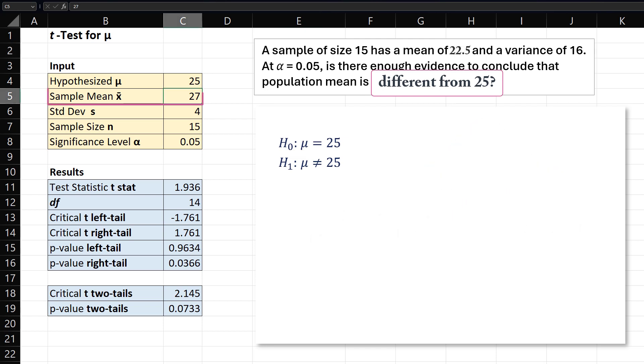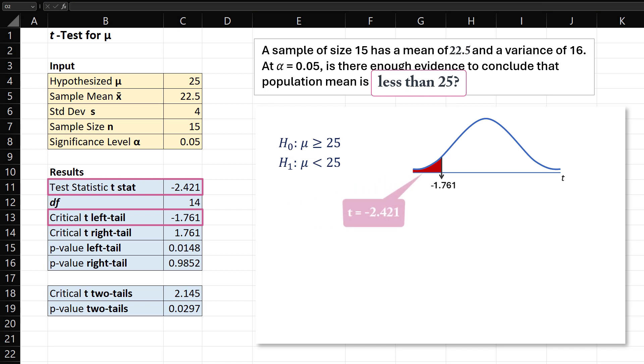Finally, suppose the sample mean is 22.5, and we're testing if the population mean is less than 25. The lower-tailed critical region would be t less than negative 1.761. Since the new test statistic falls into this critical region, or since our p-value is less than alpha equals 0.05, we reject the null hypothesis.